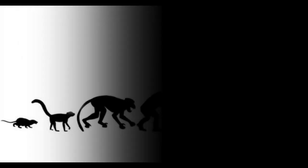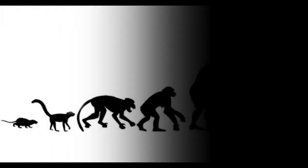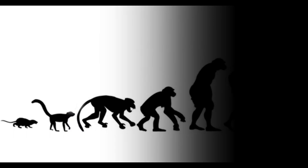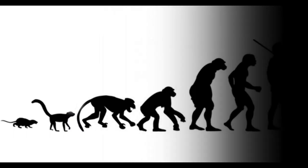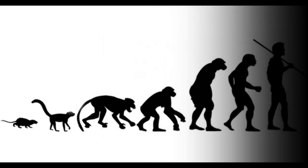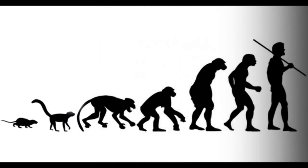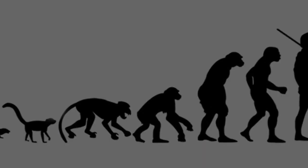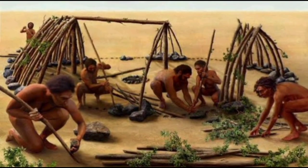The evolution of mammals led to the development of primates, and around 2 million years ago, Homo sapiens, or modern humans, emerged. Our ancestors spread across the globe, adapting and evolving to thrive in various environments.